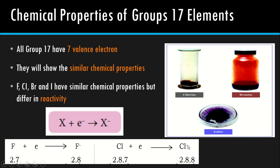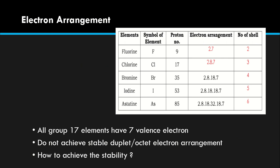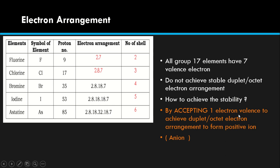The same goes for chlorine. Asal dia 2.8.7, chlorine atom. So in order to be stable, it must gain 1 electron, and after it gains 1 electron it becomes chloride ion 2.8.8 — sudah stable. Ini terbalik macam Group 1: Group 1 donate, yang ni gain. To achieve stability, they must receive 1 electron to form negative ion, which is anion.